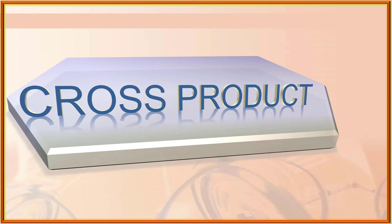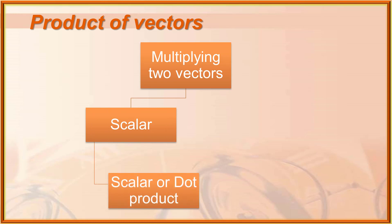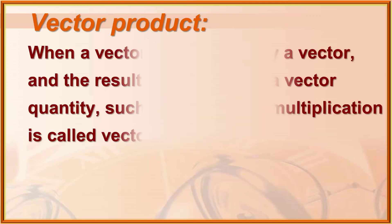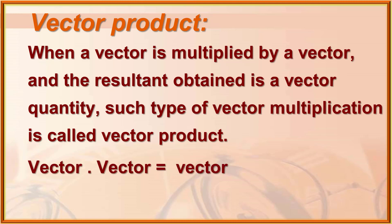After this lecture, we will be able to understand what is cross product or vector product. When we multiply two vectors and get a scalar result, that is the scalar or dot product. When we get the result as a vector, that is known as the vector or cross product. When a vector is multiplied by a vector and the result is a vector quantity, such multiplication is called vector product.